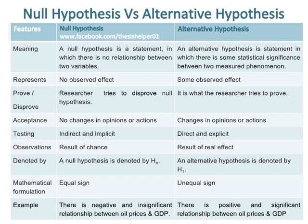A null hypothesis is denoted by H0, while an alternative hypothesis is denoted by H1. The mathematical formulation of a null hypothesis uses an equal sign, while the mathematical formulation of an alternative hypothesis uses an unequal sign.